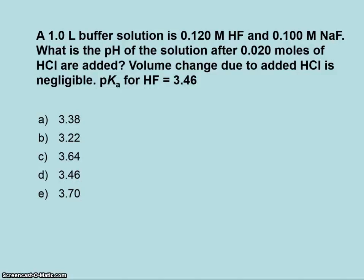Clicker question: we have a 1 liter buffer solution with 0.12 molar HF and 0.1 molar sodium fluoride. What's the pH after adding 0.02 moles of HCl? Volume change is negligible, and it wouldn't matter anyway since buffers are volume-independent. pKa is 3.46. Using the modified Henderson-Hasselbalch for acid addition, the answer is 3.22. You subtract moles of added acid from the conjugate base and add them to the conjugate acid.